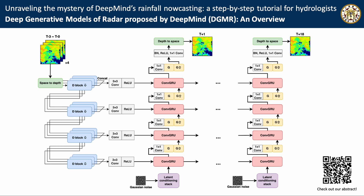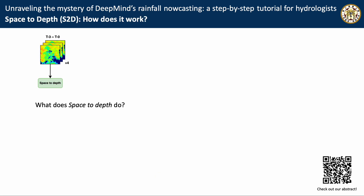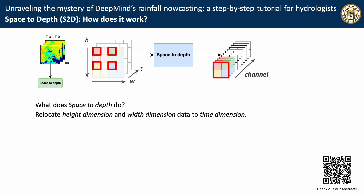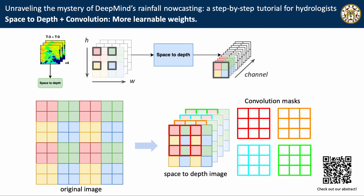Let's look into the details of the model. The input frames go through several steps to generate a single output frame. The first step is space to depth, which reallocates dimensions of height and width pixels to the channel axis. After space to depth, the channel axis contains not only temporal information but also spatial information. To understand the power of space to depth, we need to learn how convolution works on a space-to-depth image. To do convolution, we need to create more masks since the number of channels has increased. More convolution masks means more weights, so the model can be more descriptive. This is the first advantage of space to depth.